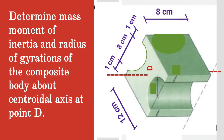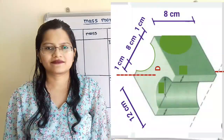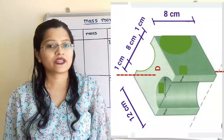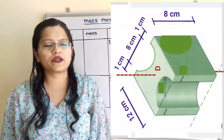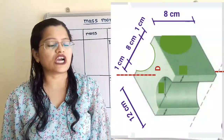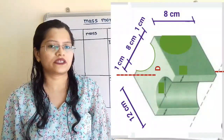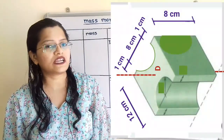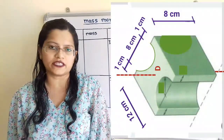Given question: determine the mass moment of inertia and radius of gyration of the composite body about the centroidal axis at point D. We will find out mass moment of inertia of the given composite body about the centroidal axis at point D.